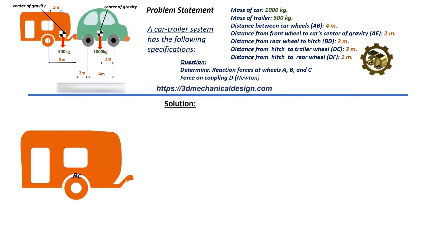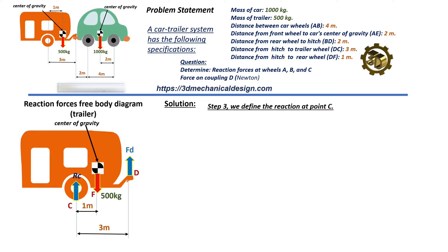Step 3: We define the reaction at point C. Method 1: Sum of vertical forces on the trailer. The sum of vertical forces equals zero. RC equals 4,905 minus 1,635 equals 3,270 newtons.